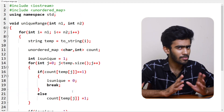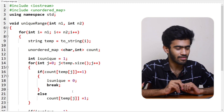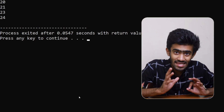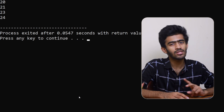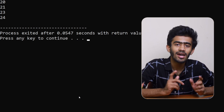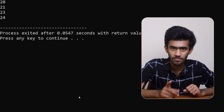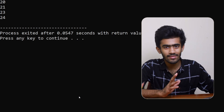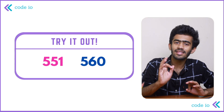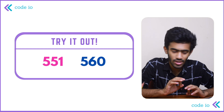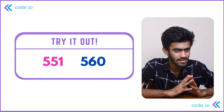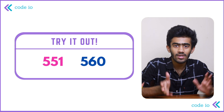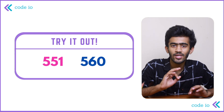Now I will try to verify. So if we look at this case: 20, 21, 23 and 24 — 22 will skip because it will repeat. That is the output. So if we look at the unique range function, we will pass these numbers: 551 and 560. So if it is unique, tell us in the comments.